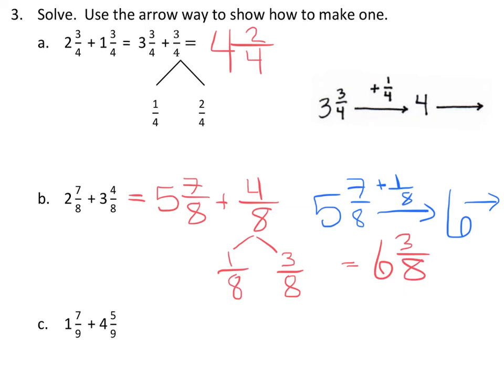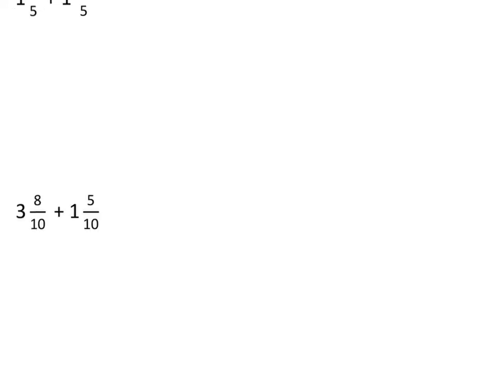Now, on the very end of this work, it says to go ahead and solve using any method. I'll do it one more time, and I'll use the arrow way to solve this last problem here: 3 and 8/10 plus 1 and 5/10. So, the arrow way. You can do it any way you like. I'm going to show you one more example. 3 and the 1 make 4.